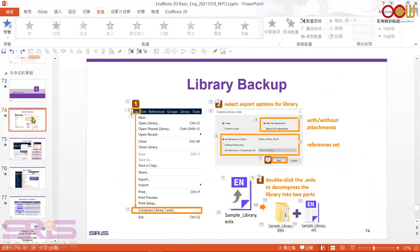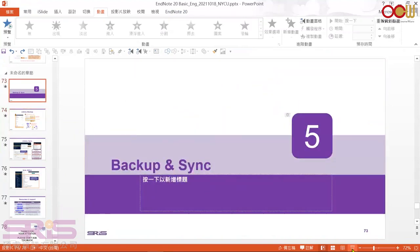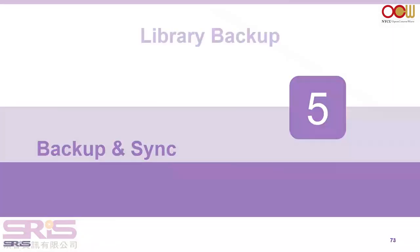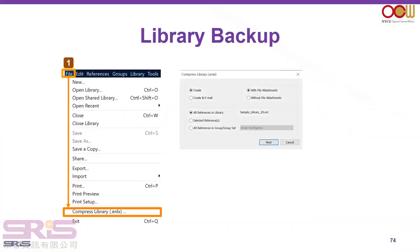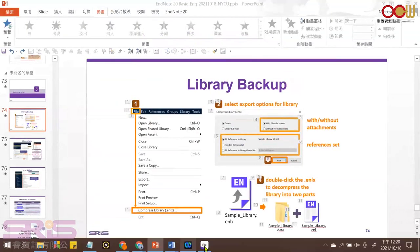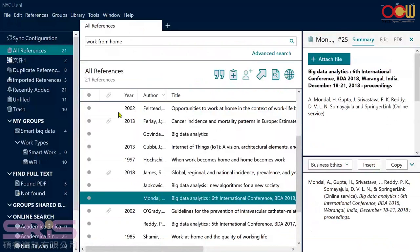The last part — very important — is to backup and sync your library. As mentioned, you cannot place your library's two files in an online syncing folder as it may collapse over time. If you want to backup your library, the easiest way is to go to File, then Compress Library. You'll find several options to choose from.